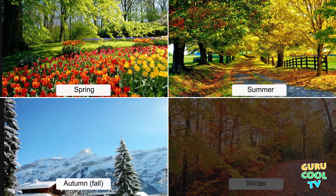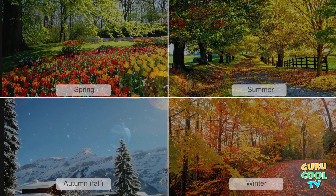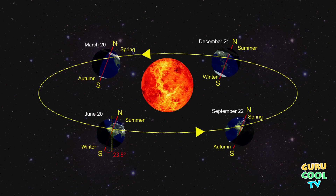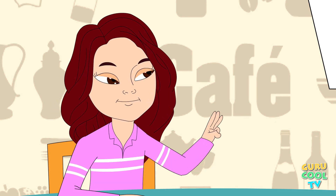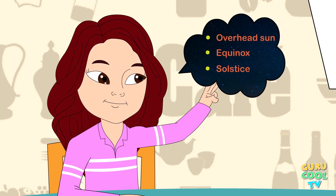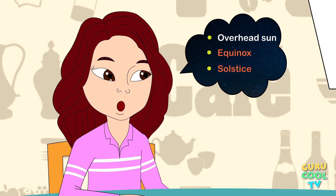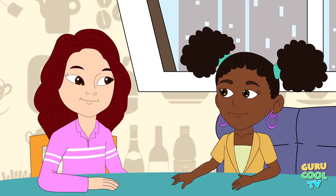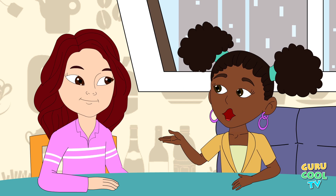This gives us the four seasons of the year: spring, summer, autumn, and winter. Regardless of the time of year, the northern and southern hemispheres always experience opposite seasons. There are three important terms to understand: overhead Sun, equinox, and solstice.